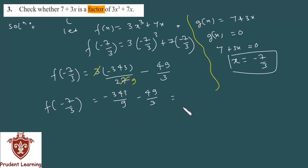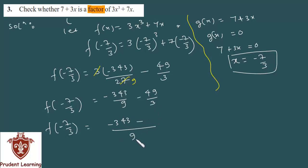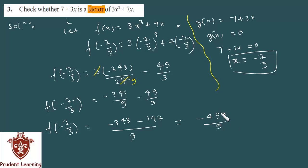अब आपको LCM लेना है। f of minus 7 by 3 में LCM 9 का लेंगे — तो minus 343 रहेगा क्योंकि 9 by 9 is 1, minus — 3 into 49 करेंगे, 3 into 49 होता है 147। तो इन दोनों का sum करने पर मिलेगा minus 490 upon 9। अब देख सकते हैं, 490 upon 9 जो है वो 0 तो नहीं है — remainder 0 नहीं है। Since 0 नहीं आ रहा, इसका मतलब 7 plus 3x is not a factor of 3x cube plus 7x।